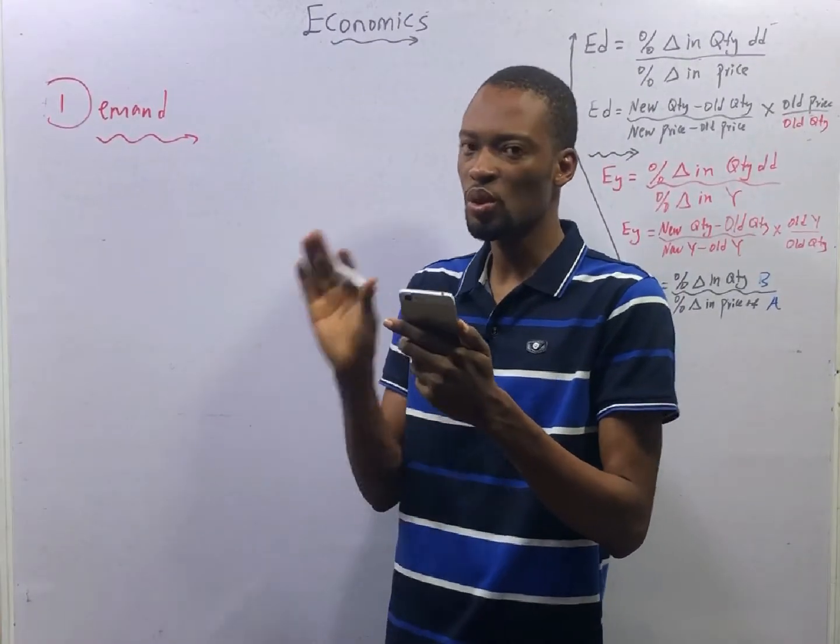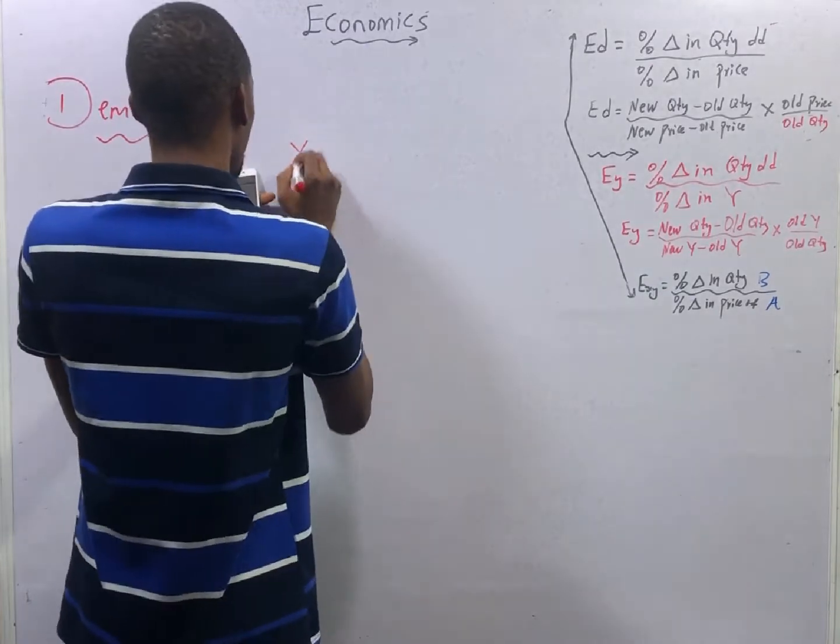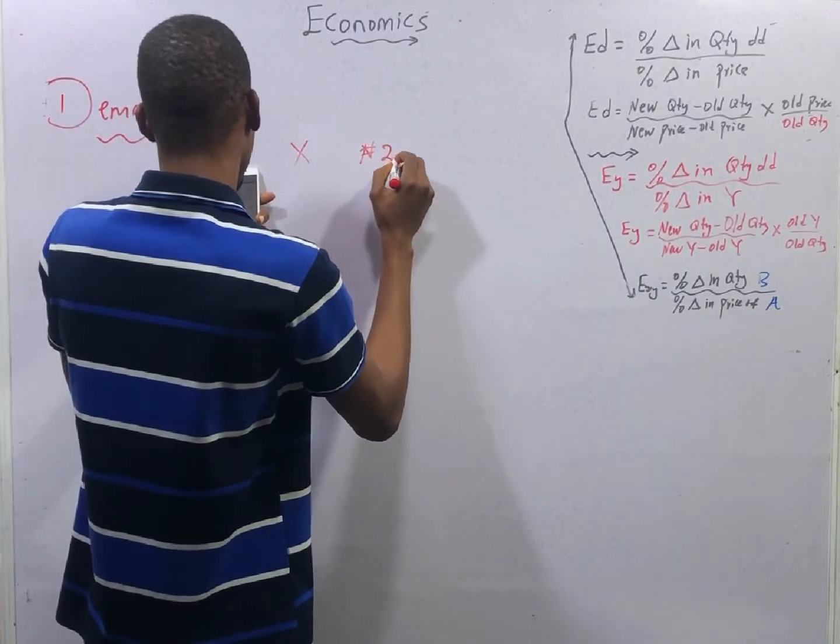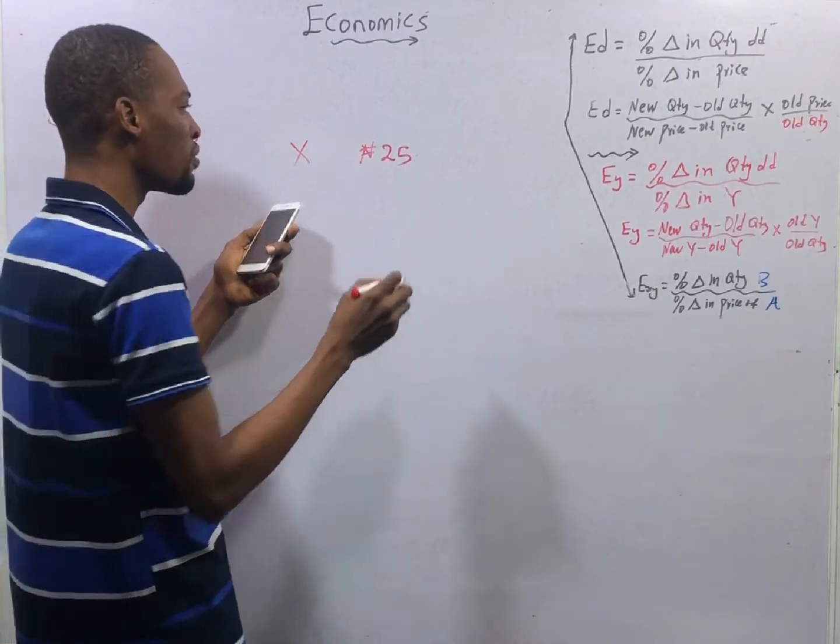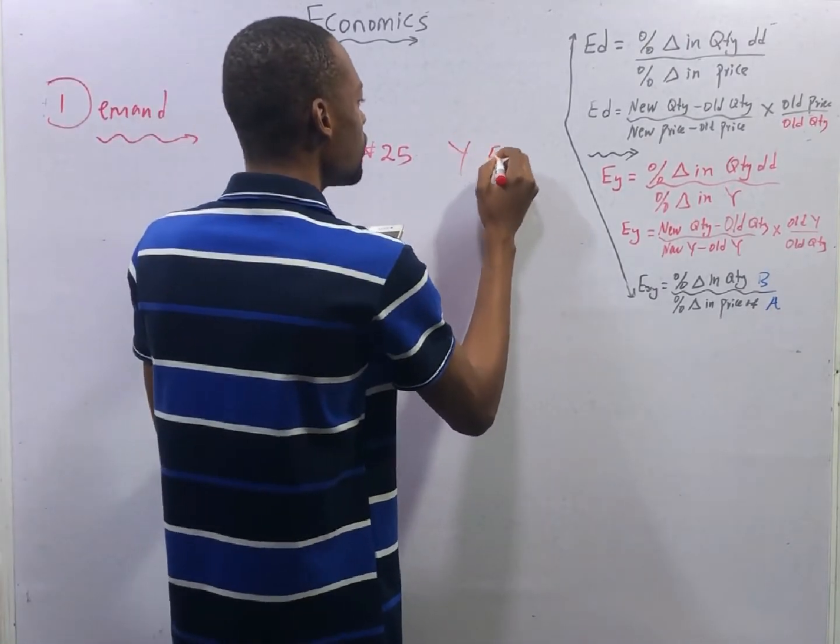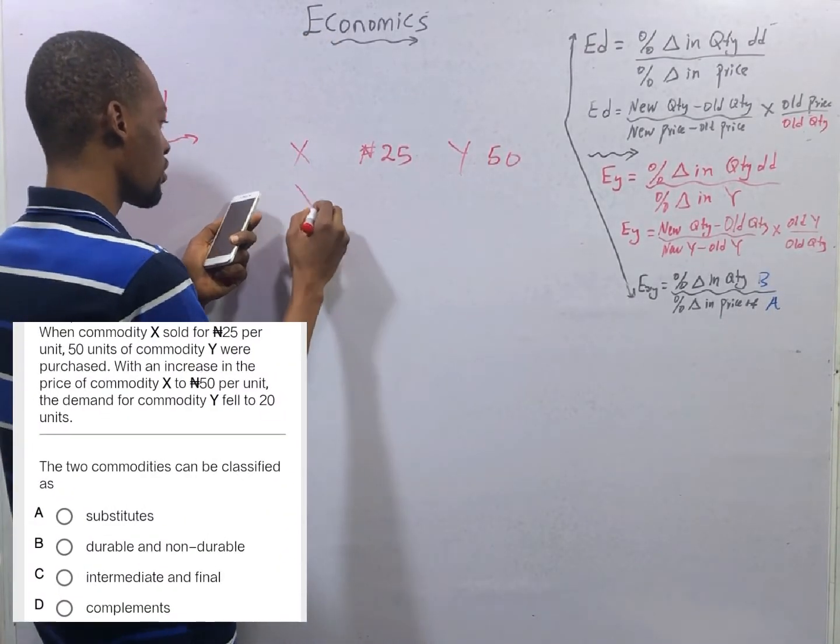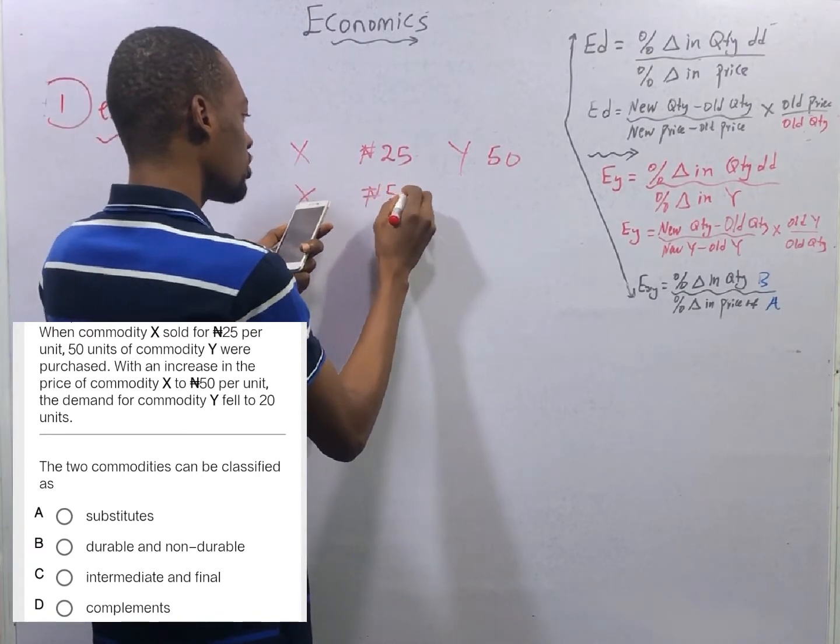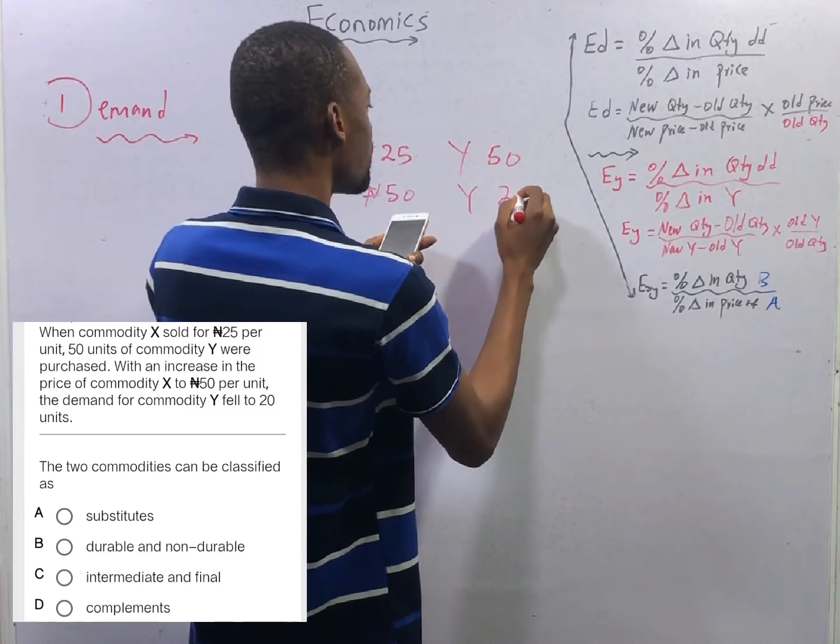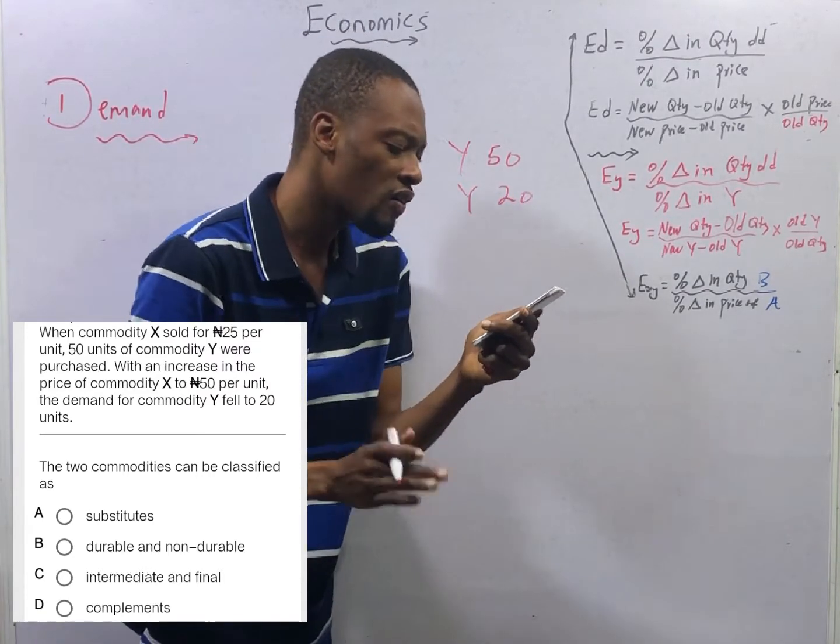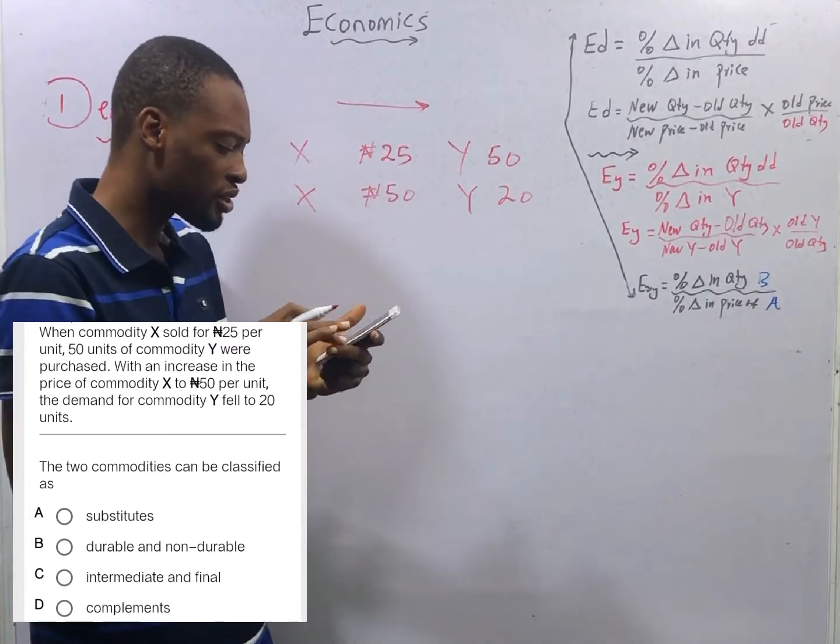Use the information below to answer this question. When Commodity S was sold for 25 Naira per unit, 50 units of commodity Y were purchased. Then, S increased to 50 Naira. In this case, Y, demand fell to 20. First of all, this is relating two products.